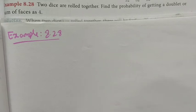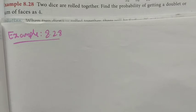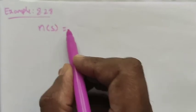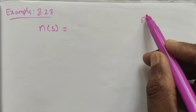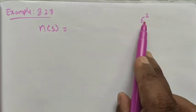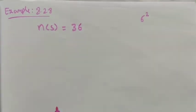Hi students, Class 10, Example 8.28: Two dice are rolled together. Find the probability of getting a doublet or sum of faces as 4. The word 'or' is used, so we want to find the union. Two dice are rolled means we have a sample space. For a single die we have six numbers, so for two dice we use six squared. n(S) = 6² = 36.